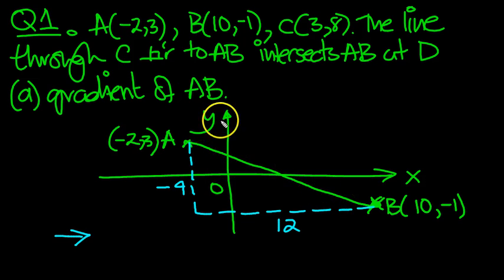So here then, the gradient of AB, the increase in Y is minus 4. It's a negative slope. So we've got a negative there. The increase in X is 12. So it's minus 1 third. There we go. It's part A. There we go. Thank you.